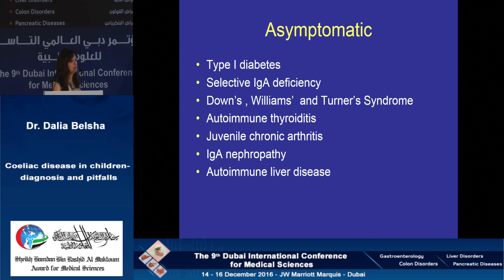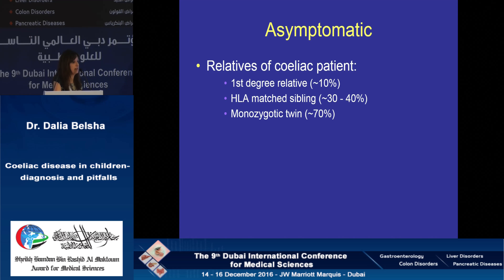For asymptomatic patients — those at risk of developing celiac disease — there is a 10% chance of developing celiac disease in type 1 diabetes, 7% in selective IgA deficiency, and 10% in Down syndrome and other syndromic conditions, autoimmune thyroiditis, JIA, IgA nephropathy, and autoimmune liver diseases. All these patients require you to think of celiac disease during follow-up. Additionally, 30% of HLA-matched siblings have celiac disease, and 70% of monozygotic twins.